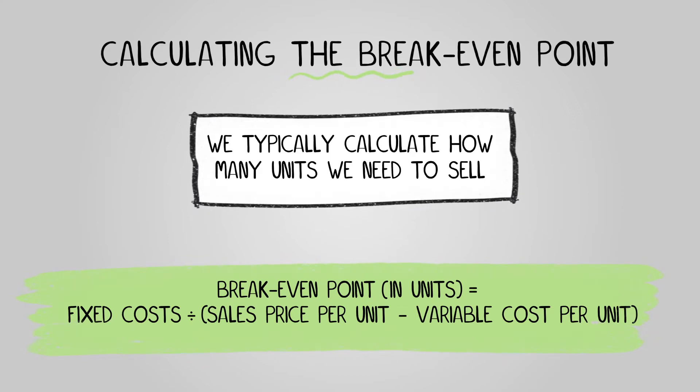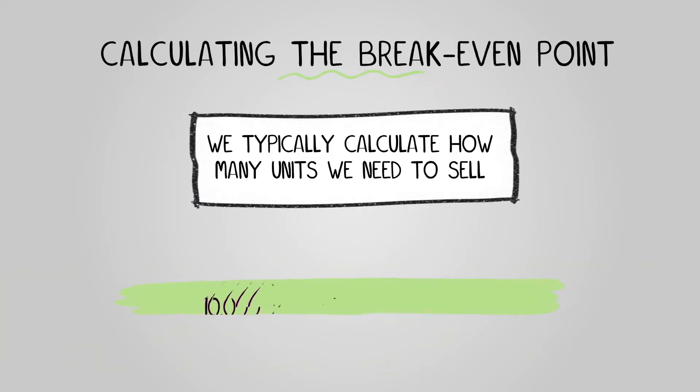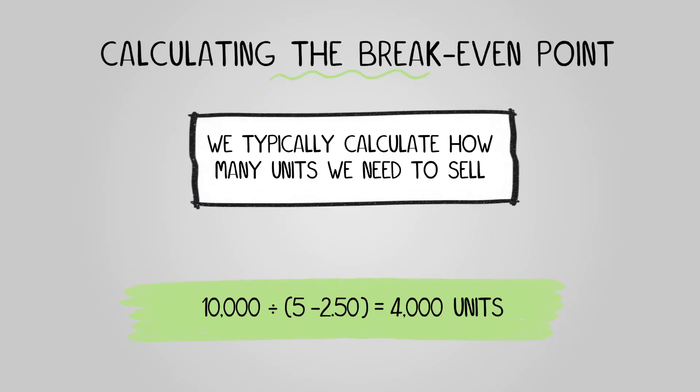So, for example, if we have fixed costs of ten thousand pounds, a sales price per unit of five pounds, and a variable cost per unit of two pounds fifty pence, then our break-even point would be ten thousand divided by five minus two point five, which equals four thousand units.